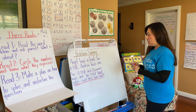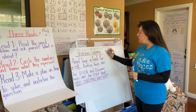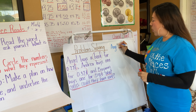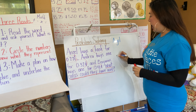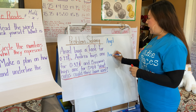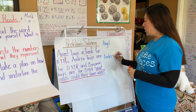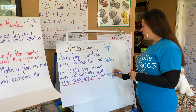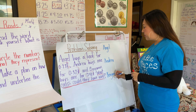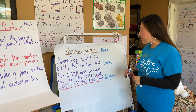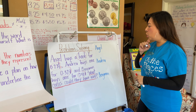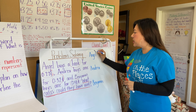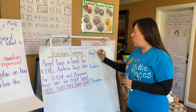Now my third read: I have to make a plan and know what I'm going to do to solve it. I'm going to underline the question. Angel buys a book for 27 cents, Andrea buys one for 32 cents, and Benjamin buys one for 41 cents. The question is: what coins could they have used? It's not asking us to add or subtract — it's asking what coins they can use.